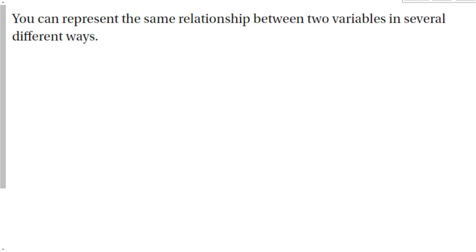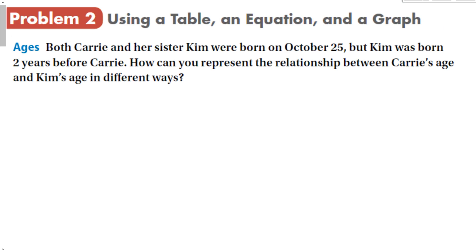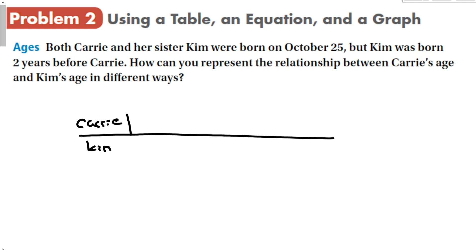We can represent the same relationship between two variables in several different ways. For this problem, we're going to use a table, an equation, and a graph. Both Carrie and her sister Kim were born on October 25th, but Kim was born two years before Carrie. How can you represent the relationship between Carrie's age and Kim's age in different ways? Let's start with a table — Carrie on one side, Kim on the other.